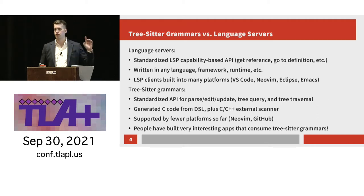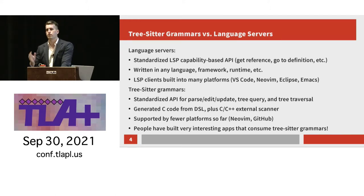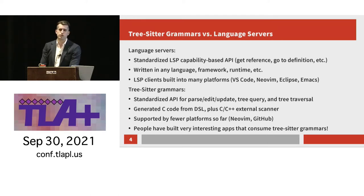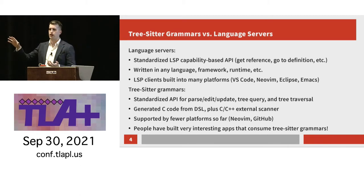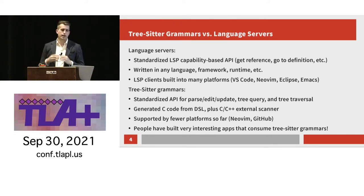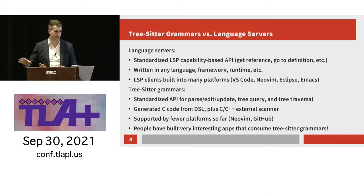Let's talk about the difference between TreeSitter grammars and language servers. A language server was designed to solve the problem that if you have a programming language and want to write an extension for an editor, you used to have to write a different extension for every single editor, which is very annoying. Microsoft came up with a standard called the Language Server Protocol — a standardized API with things like get reference, go to definition, et cetera. If you write a program that implements that API, a lot of different editors can just talk to that language server, and right out of the box you get pretty good language support. You can write an LSP in any language — the language server for Rust is written in Rust, the language server for R is written in R.